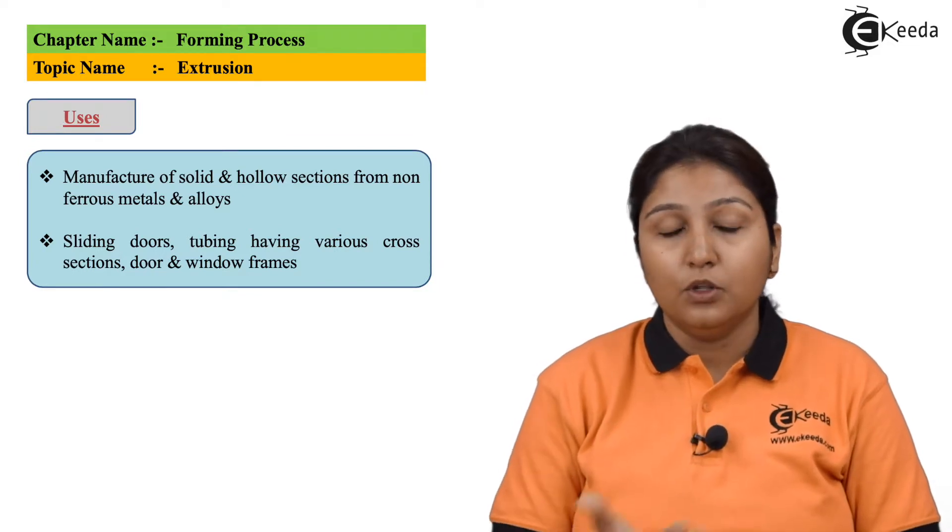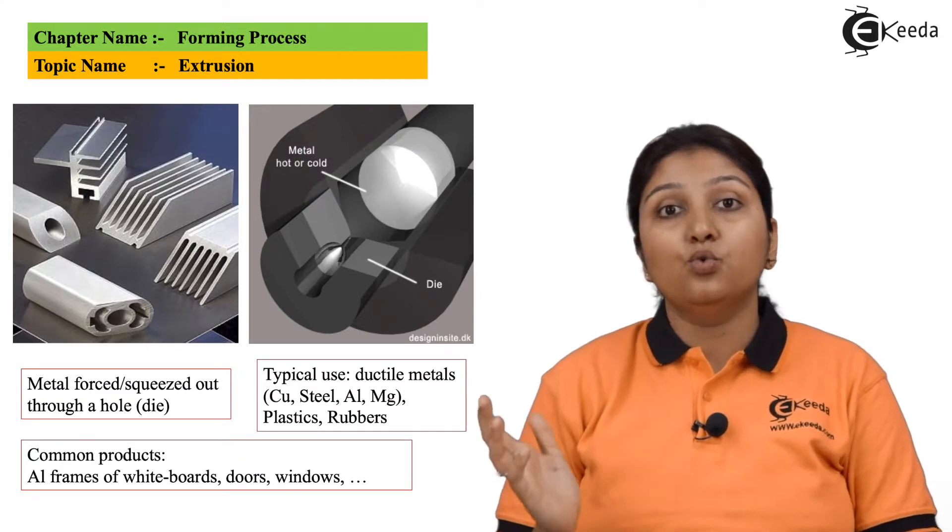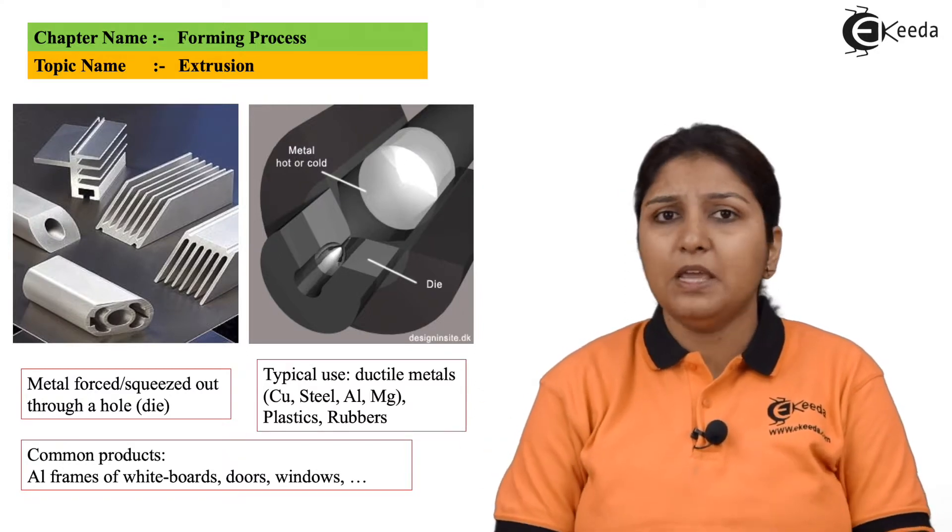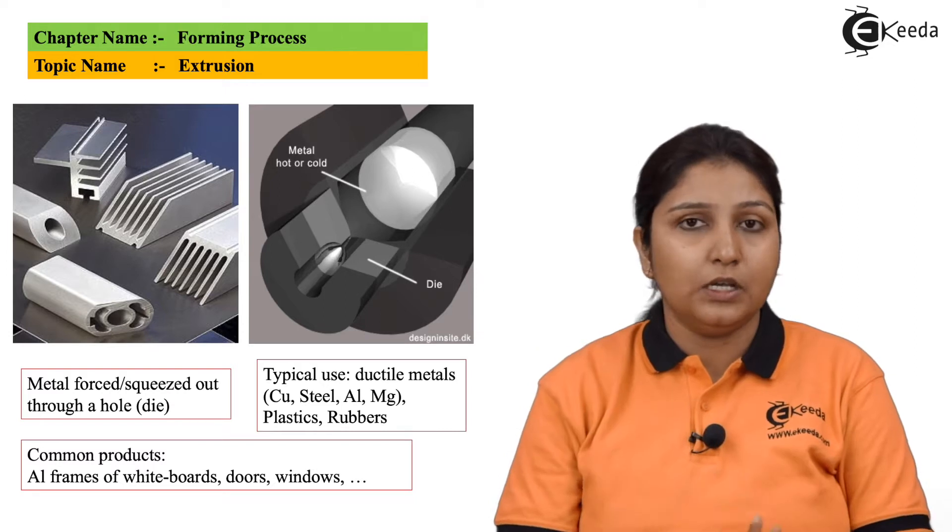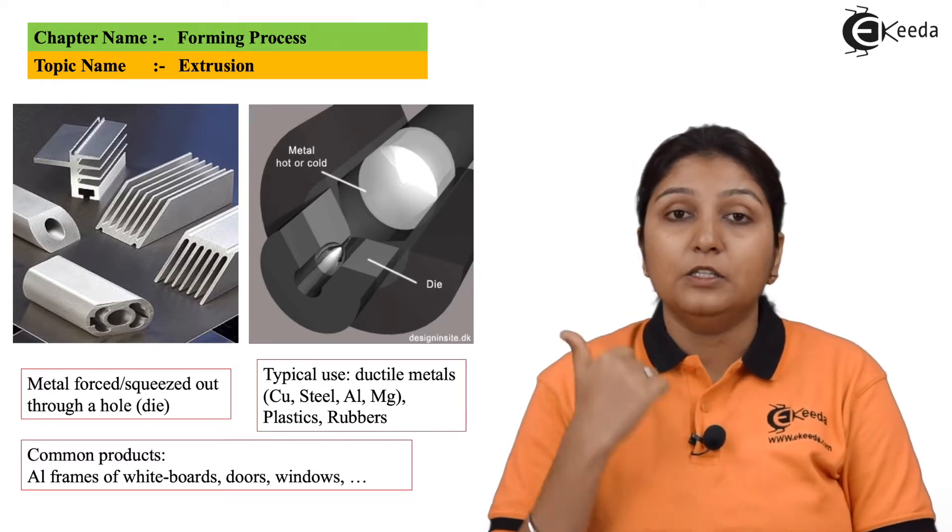In this diagram, you can see some extruded products. Material can be aluminum, steel, or any other material that can be extruded, but the specialty is that material should be ductile.